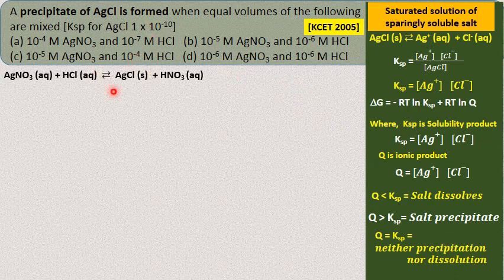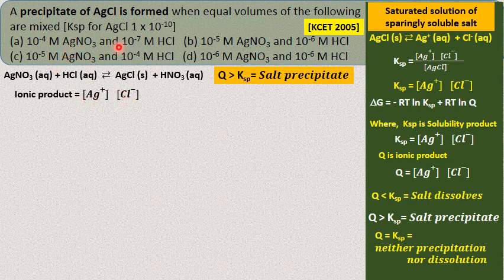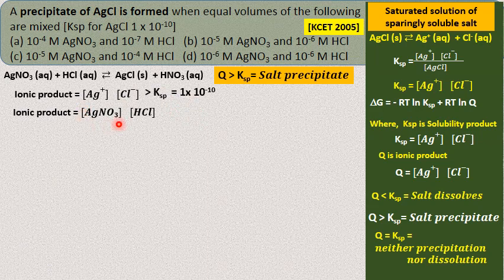Using this, solve the problem. The condition for precipitation is Q > Ksp. Ksp for AgCl is 1 × 10⁻¹⁰. Q is the product of silver ion and chloride ion concentrations. Silver and chloride ions come from silver nitrate and HCl respectively — they are strong electrolytes, so their concentrations equal those of the salts. We need to check which combination gives Q > Ksp. Let us verify one by one.